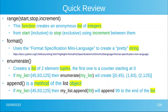Format uses the format specification mini-language to make pretty strings — there's a link there for you. Enumerate is a nice one — it creates a list of two-element tuples. The first element is a counter that starts at zero. So if your list is three items — 45, 83, and 125 — then enumerate(my_list) will create: (0, 45), (1, 83), (2, 125), so you get a counter.